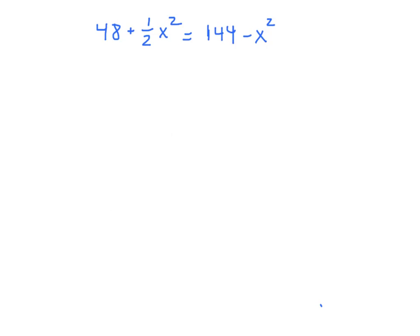If we rearrange the terms, I'm going to add x squared to both sides. That'll give me three halves x squared. And I'll subtract 48 from both sides. And that'll give me 96. Then I have to multiply by two thirds, right, to solve this thing. And two thirds of 96 happens to be 64. And to solve for x, we take the square root of 64. We get plus or minus 8.